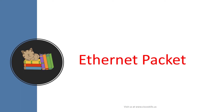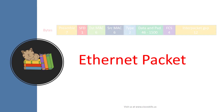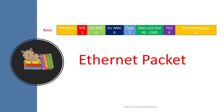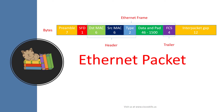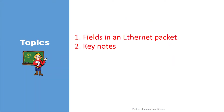We usually talk about the Ethernet frame; however, for actual data transmission, the Ethernet frame is encapsulated in an Ethernet packet. You can easily figure out that this is the Ethernet frame, and within it, this is the header and this is the trailer. In this lesson, we will talk about all the fields in an Ethernet packet, then sum up with the keynotes.